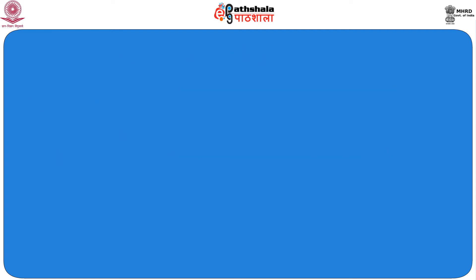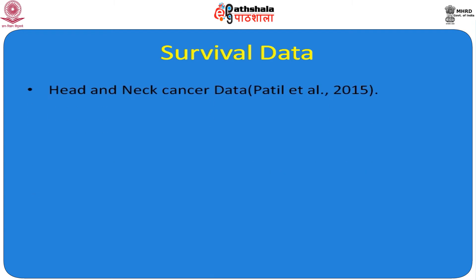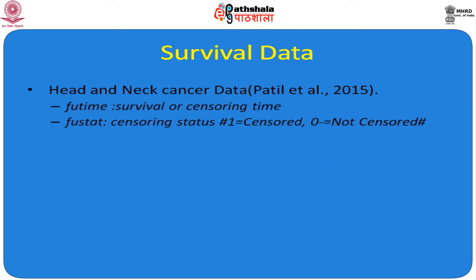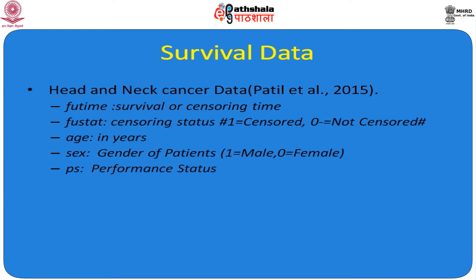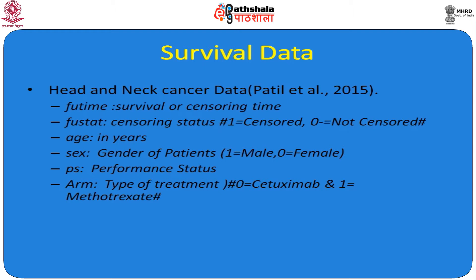The data is survival data taken from the head and neck cancer trial of Partil et al. in 2015. This is a partial dataset used for illustration in this module. Here, fu_time is the survival or censoring time of the patients; fu_stat is the censoring status where 1 stands for censored and 0 stands for not censored. Age of the patient is considered, gender is coded as 1 for male and 0 for female. Performance status is considered as PS, and arm represents the type of treatment: 0 for cetuximab and 1 for the methodopsic arm.